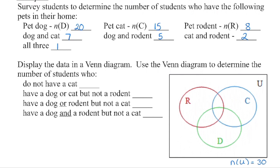Welcome back. We need to begin in the middle. This middle section of the Venn diagram represents students who have all 3 types of pets. There is only 1 student who fits that category, so we put a 1 in there. We're now going to work our way out. This section would be rodent and cat only — rodent and cat is 2 students, but there's already 1 in there, which means there is 1 student who has a rodent and cat only.